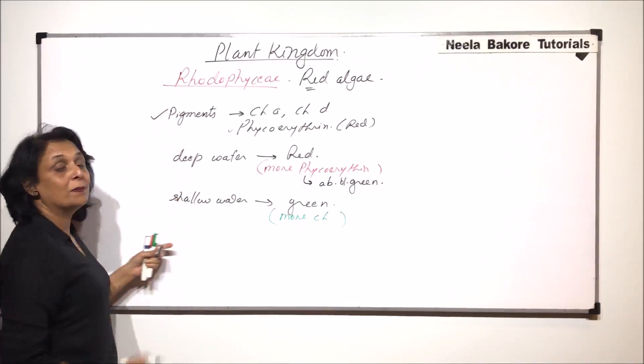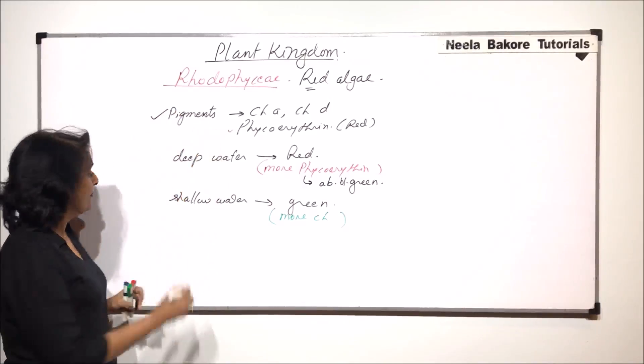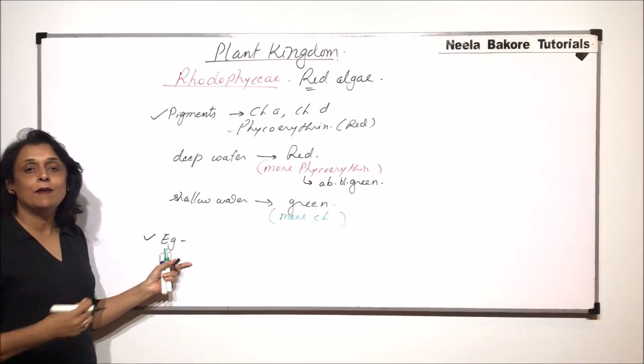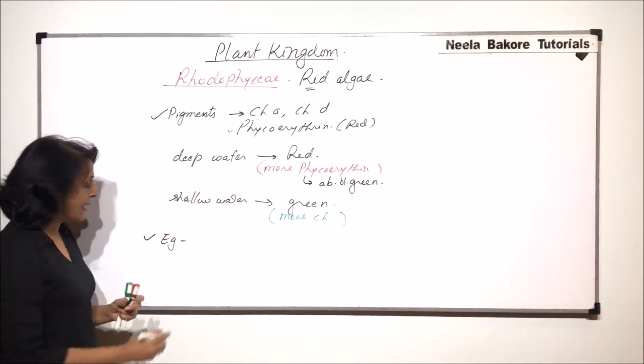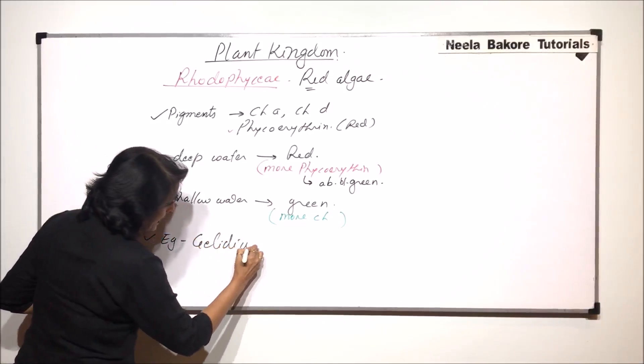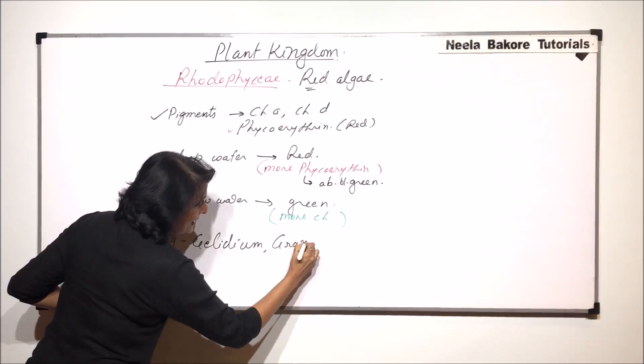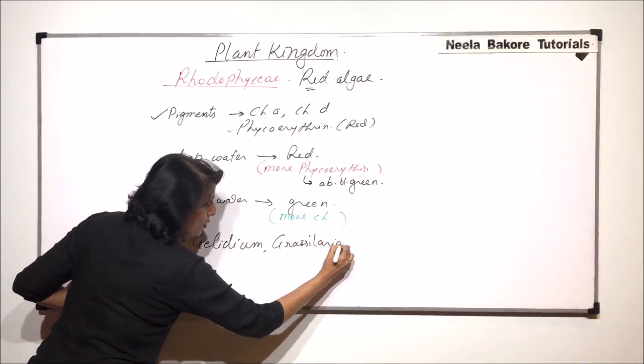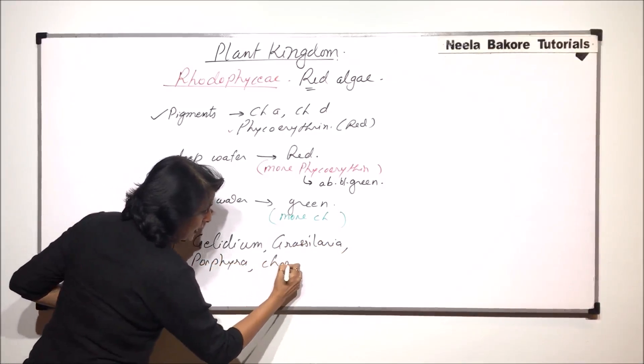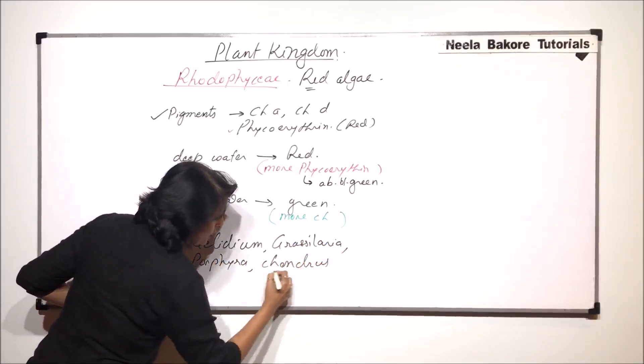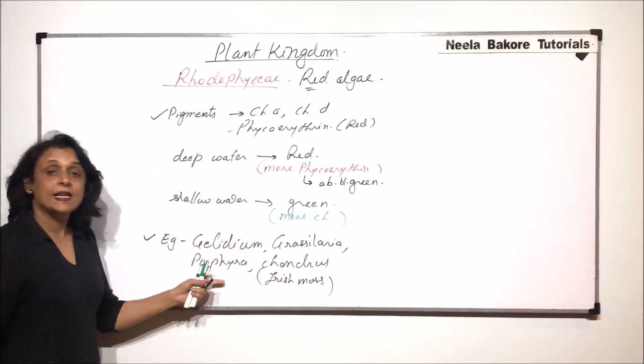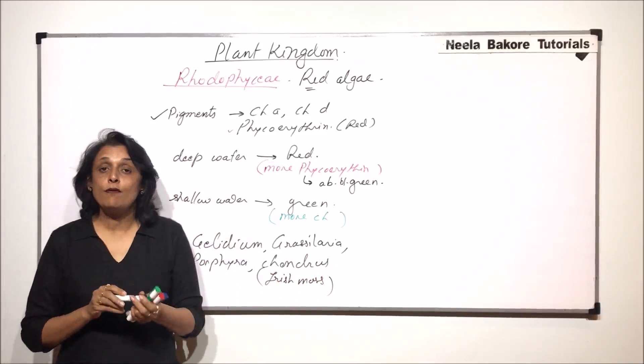So these are the pigments which are found in this red algae. We will first try a few examples of red algae and then when we come to economic importance, we will take these examples again. Gelidium, Gracilaria, Porphyra, Chondrus, which is commonly known as Irish moss. These are some common examples of red algae.